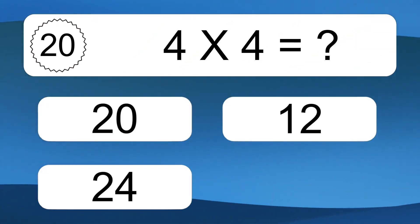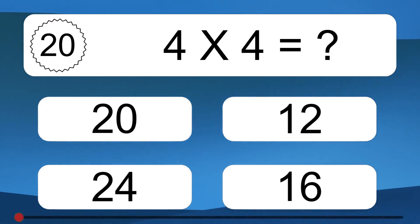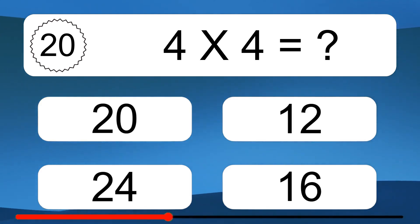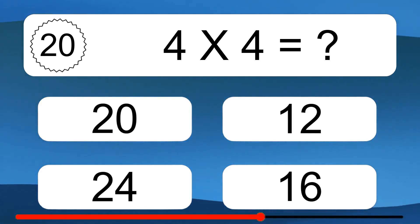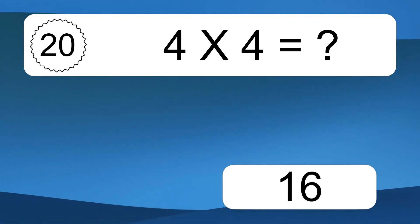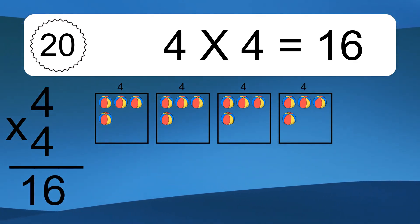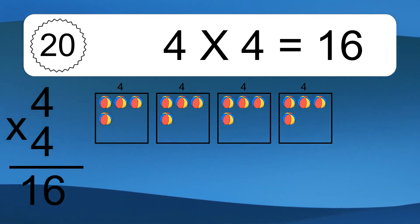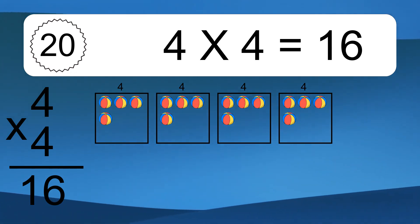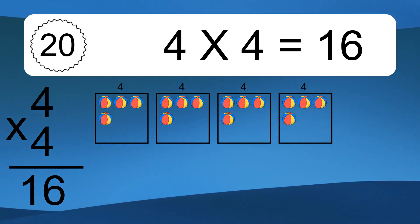4 times 4 equals what? 4 times 4 equals 16. We have 4 boxes and each box has 4 colorful balls inside. If you count all the balls in all the boxes together, you will have 4 times 4 balls.